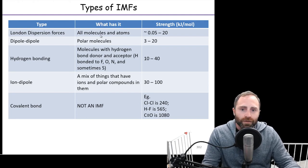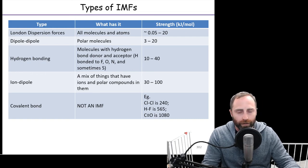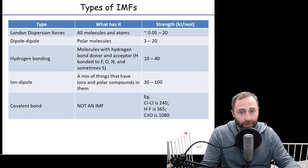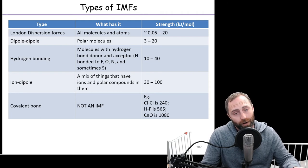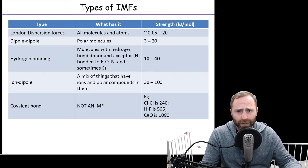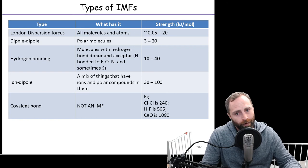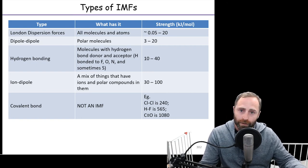We've now covered London dispersion forces, dipole-dipole, and hydrogen bonding. Next is ion-dipole: an ion interacting with polar molecules. Because an ion has a formal charge while dipoles have only partial charges, it takes a large number of polar molecules with partial negatives to fully interact with one formally charged ion. The key distinction from dipole-dipole is that ion-dipole involves an actual ion, whereas dipole-dipole involves only polar molecules with no ions.